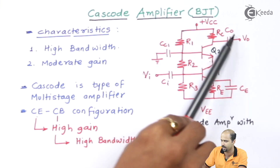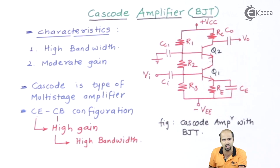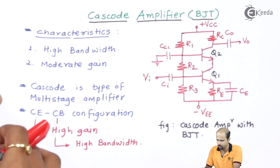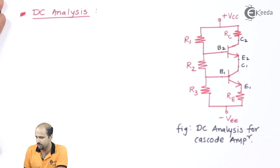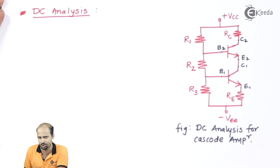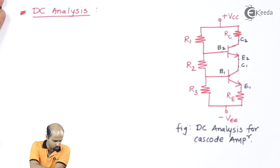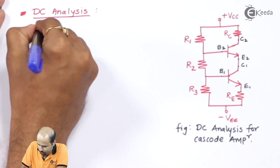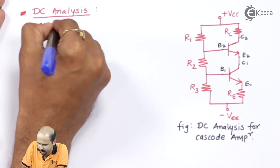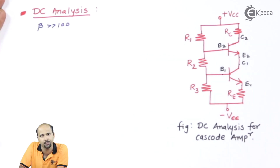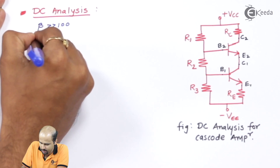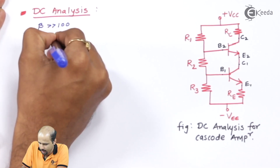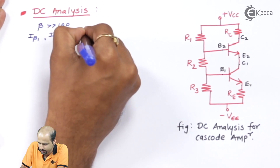Let's move to the DC analysis of this cascode amplifier. By opening all the coupling and bypass capacitors, whatever circuit we get is the DC analysis circuit. We will deal with the approximation that beta is much greater than 100, which means IB1 and IB2 can be neglected.